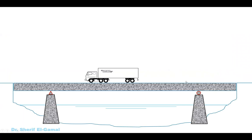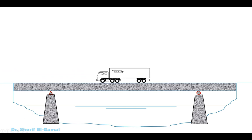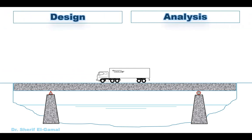Let's assume we have a bridge like this one and we have cars and trucks passing above this bridge. For that bridge you will have two options. The first one is to design the bridge and the second option is to analyze. Design is used when we have to build a new structure, so we need to design the structure from the beginning, knowing the cross-section dimensions and get the area of the steel reinforcement.